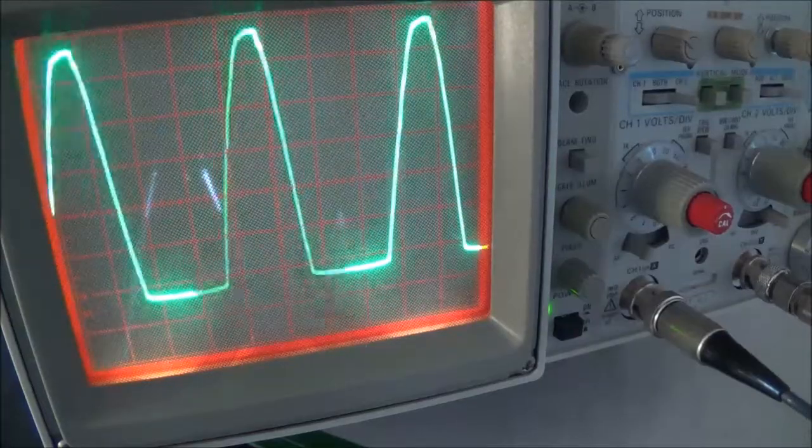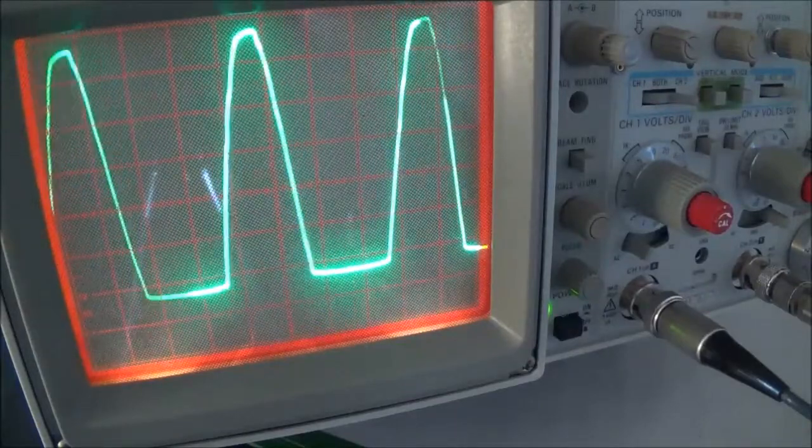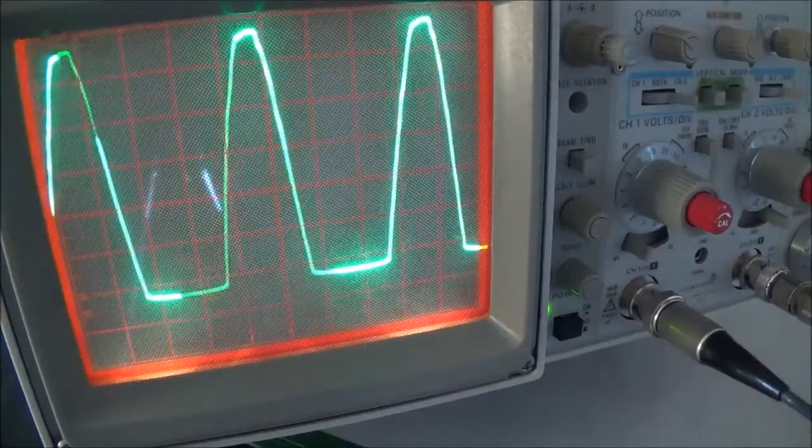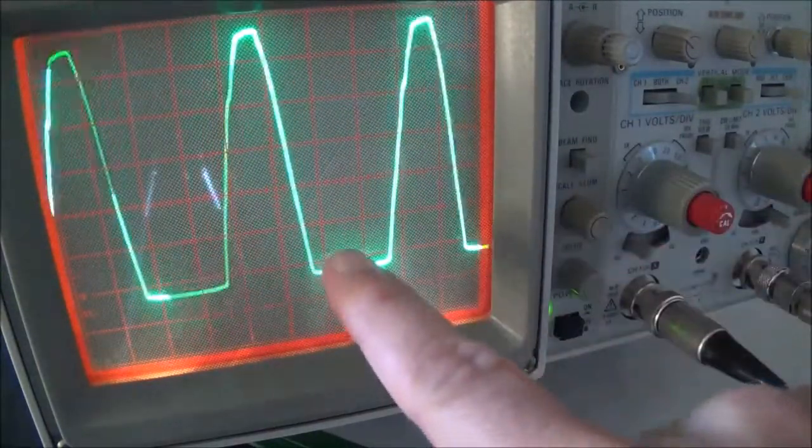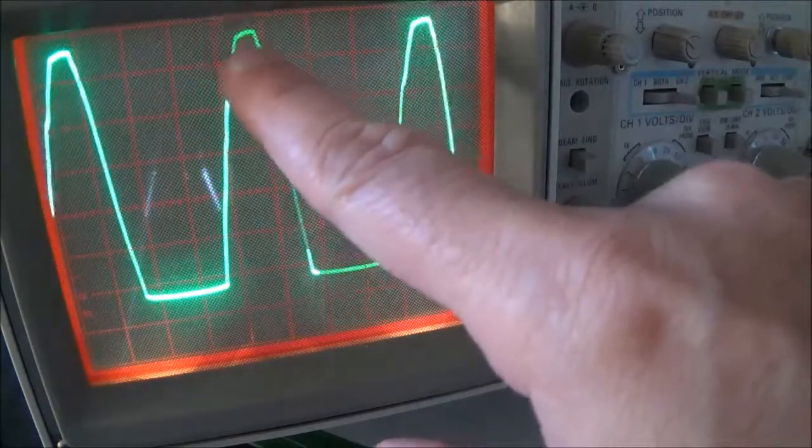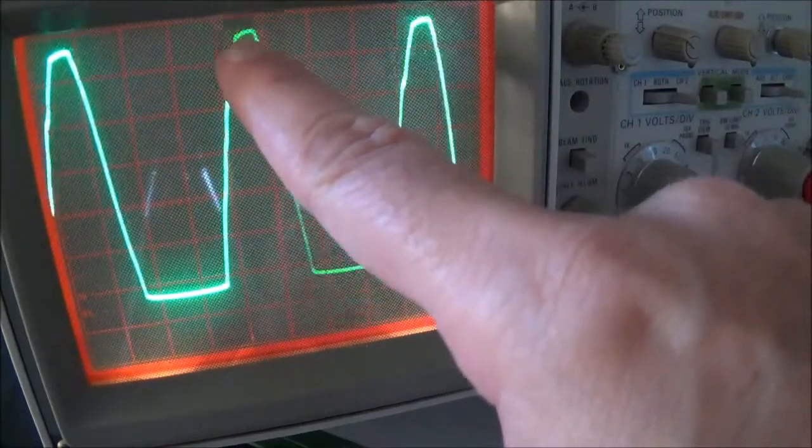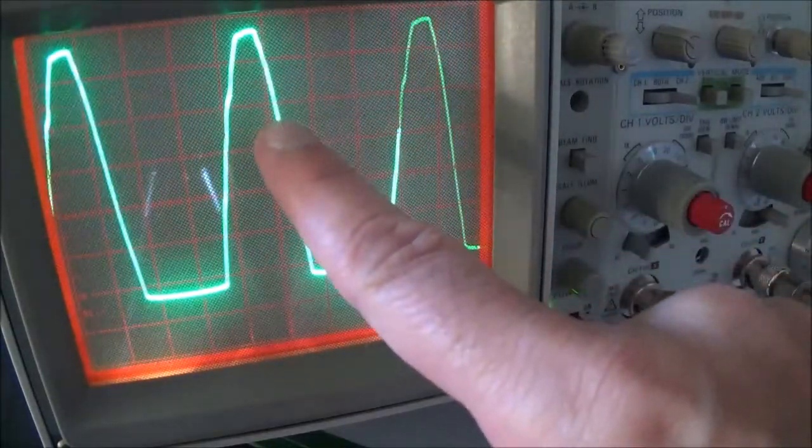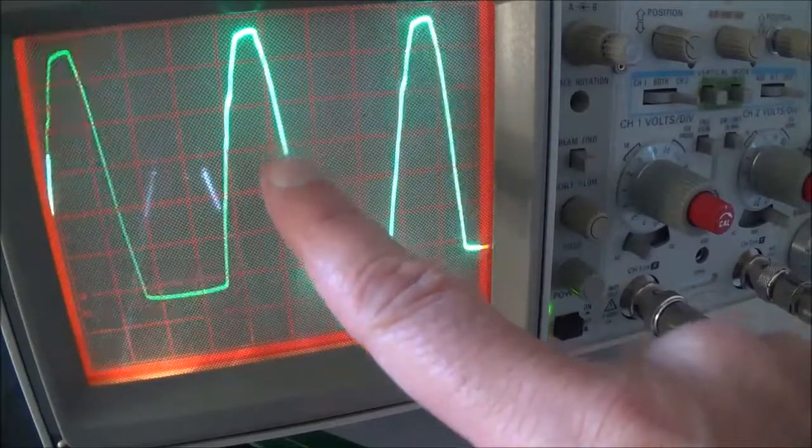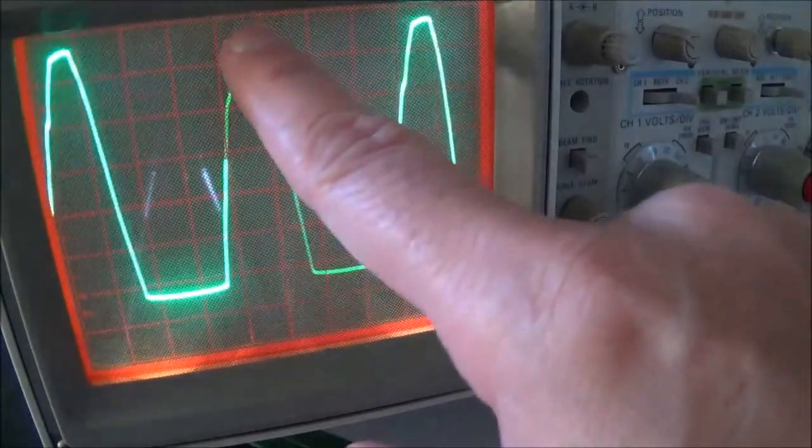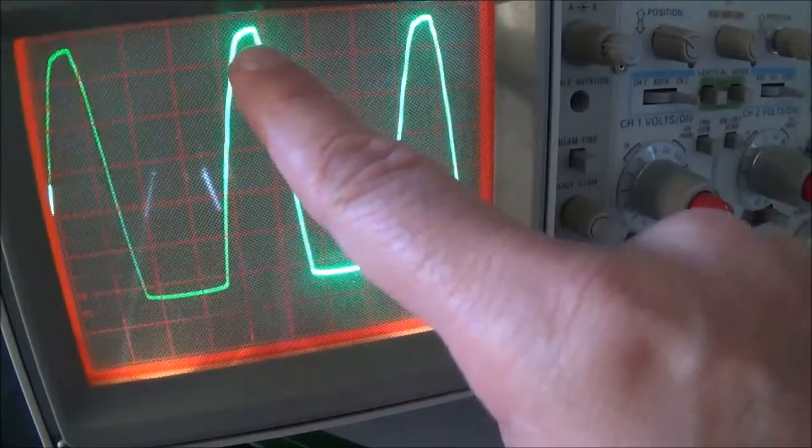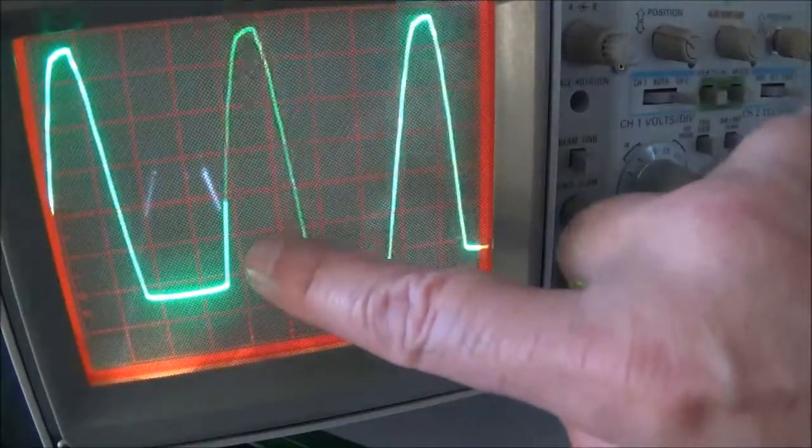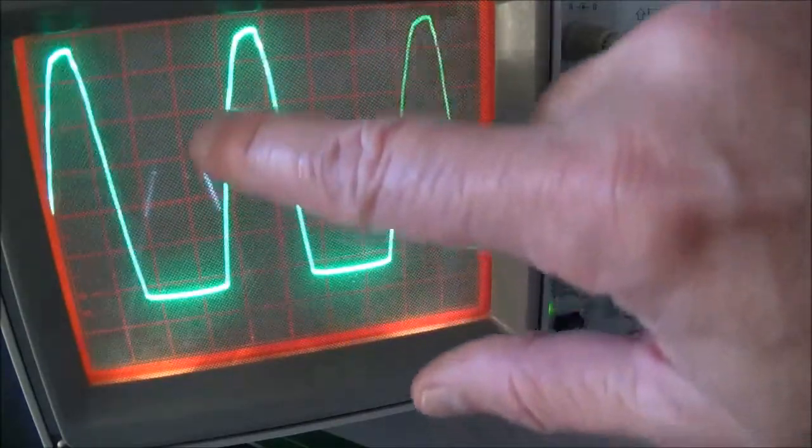So I now have a generic 1N4148 hooked up, and the oscilloscope is across that. I'm on 2 volts per division, and you can see here - if you look at the top, it's more like almost a sine wave. I don't think this is useful as a Zener diode, although you could probably put it in a pinch if you knew the reverse breakdown voltage.